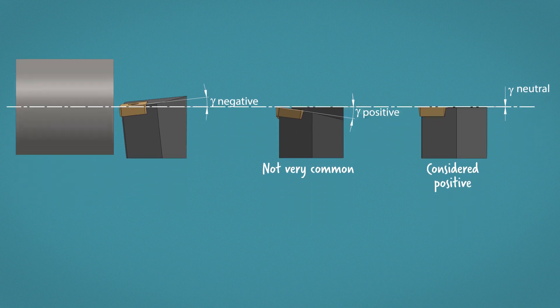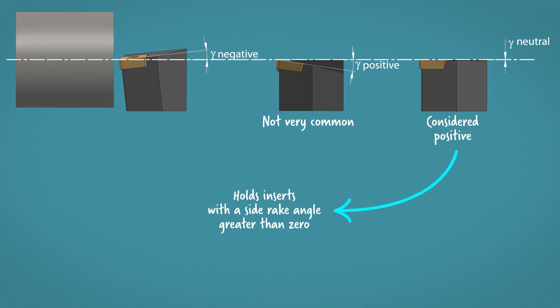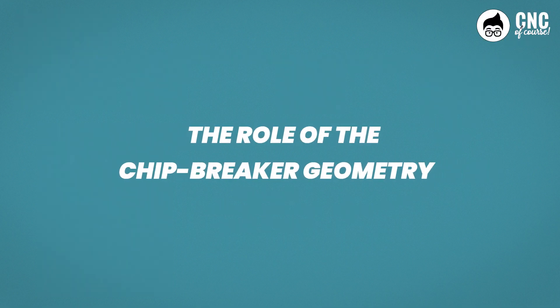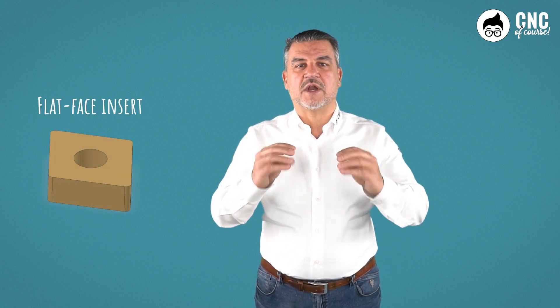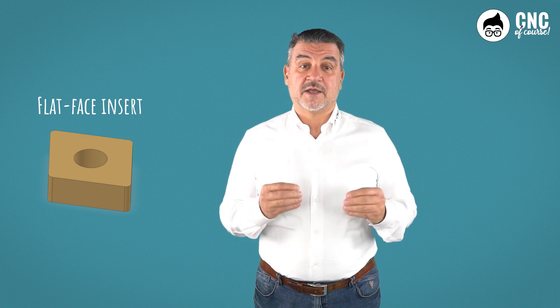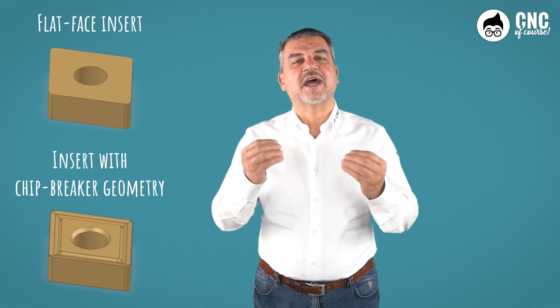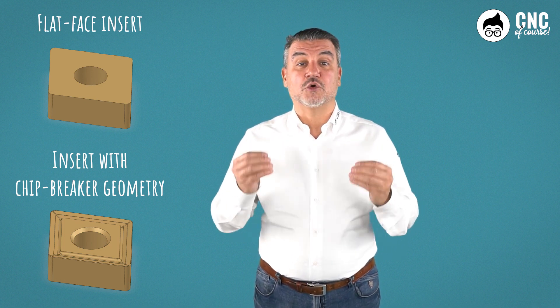and the reason for this is related to two aspects. The first is that it will have to mount an insert with a clearance angle greater than zero, so single-sided inserts are less robust than inserts mounted on negative tools. The second reason is that in most cases, it will be the shape of the chip breaker that makes it positive. In today's lesson, we have always shown inserts with no chip breaker geometry, also called flat-face inserts.